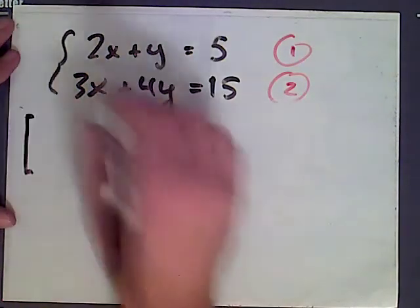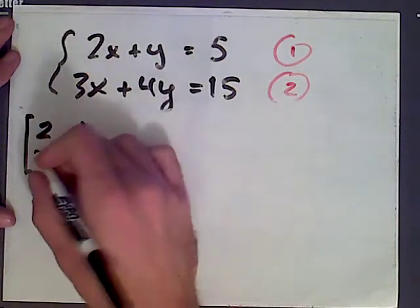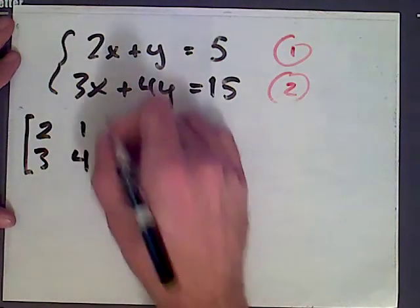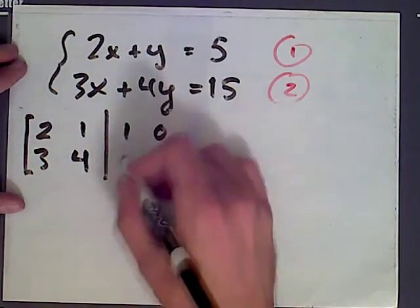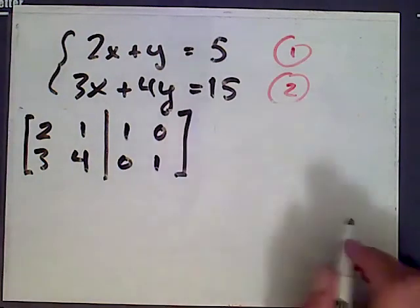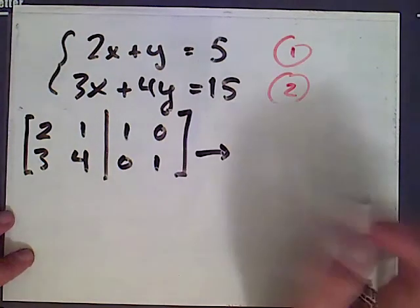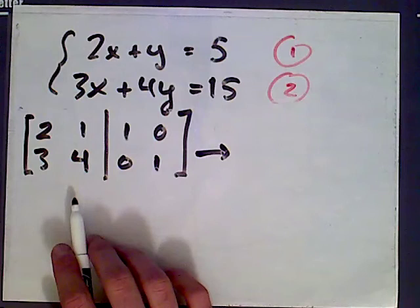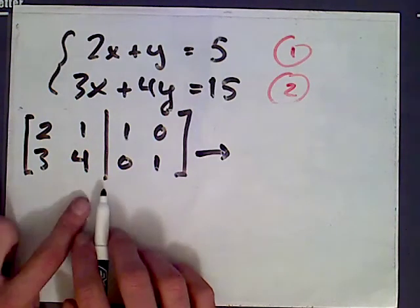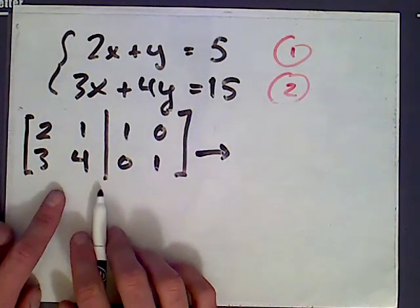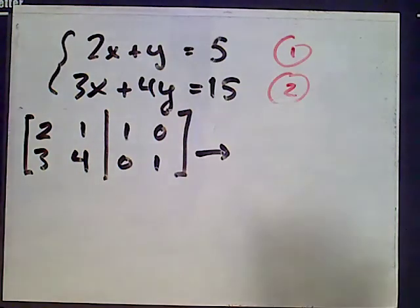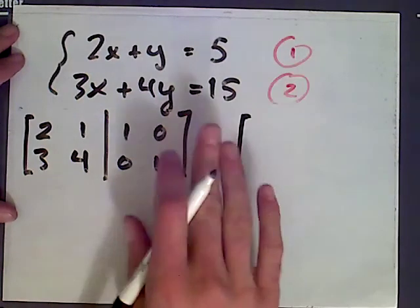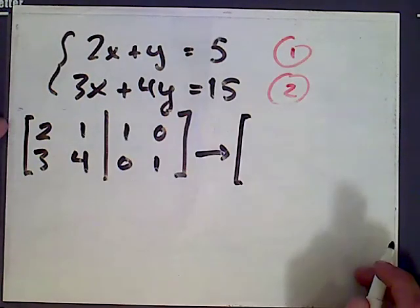Here's the procedure: take the coefficient matrix of your system, and beside it, again separated by a vertical line, put the identity matrix. Now what we're going to do is row reduce using the row operations we saw before to make what's to the left hand side of this vertical bar the identity matrix, and then we'll see what's on the right hand side. We're going to do the row operations across the bar. We saw how to do this before. The first step is to multiply the top row by 3.